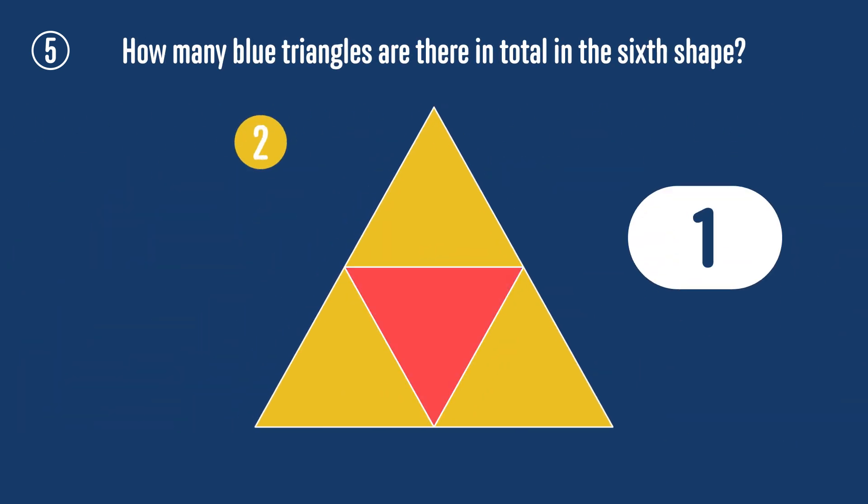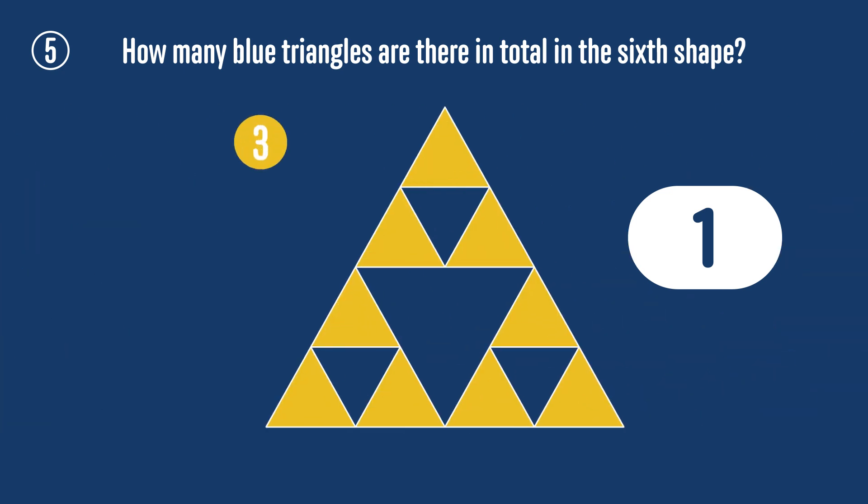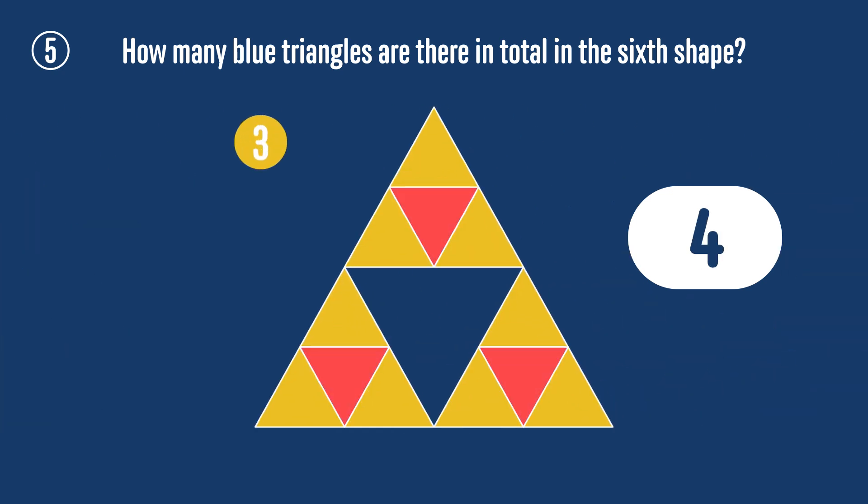The solution to this challenge is that there will be 121 blue triangles cut out from the sixth shape. The second shape has one blue triangle cut out. In the third shape, we see there are three additional triangles cut out, giving a total of four. In the fourth shape, there are three sets of three additional triangles cut out, adding another 9 and bringing the total up to 13.